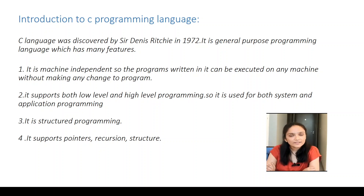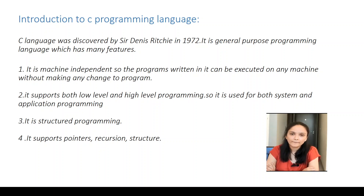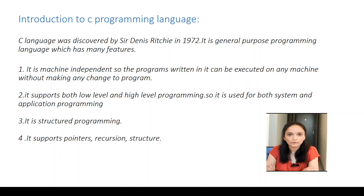C language was designed by Sir Dennis Ritchie in 1972 at AT&T Bell Labs. It is a structured programming language, which means the whole program is divided into small parts or functions, which makes it easily codable and understandable.